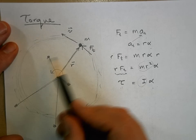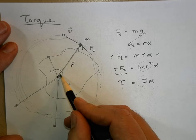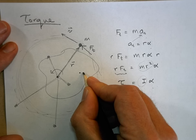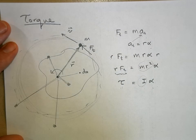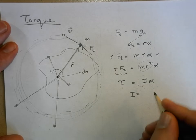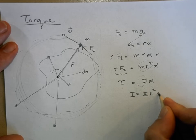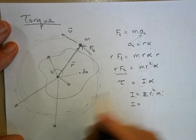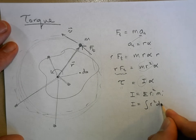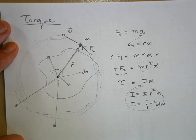What if I turn this into some blobby shape? Instead of adding little particles, I add a little dm. When I had particles, I was the summation of r_i squared times m_i. But for an extended body I change this to the integral of r squared dm — but it's the same thing in the equation.